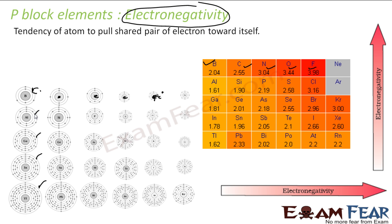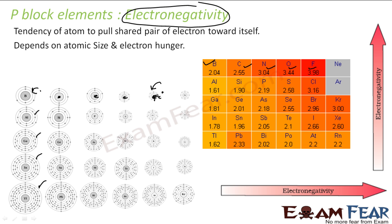Electronegativity is the tendency of an atom to pull a shared pair of electrons towards itself. Two factors favor higher electronegativity: first, small atomic size; and second, high positive charge in the nucleus. Fluorine has the highest electronegativity because it wants one more electron to become stable — it has the greatest electron hunger and capacity to attract electrons.